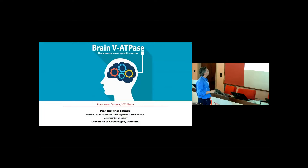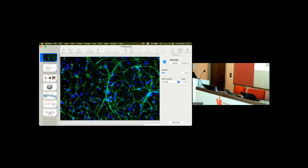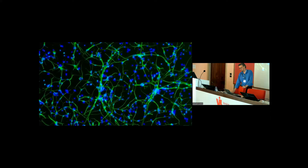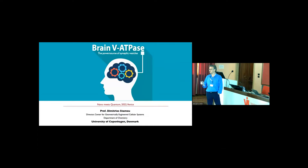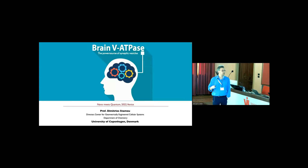The brain VATPase is a powerhouse in synaptic transmission, and what does that mean? It means that the brain VATPase is energizing synaptic vesicles. Synaptic vesicles are nanocontainers — literally 40 nanometers in diameter — and they are the containers that carry neurotransmitters. For neurons to communicate with each other, these neurotransmitters have to escape synaptic vesicles.